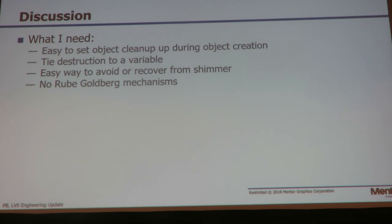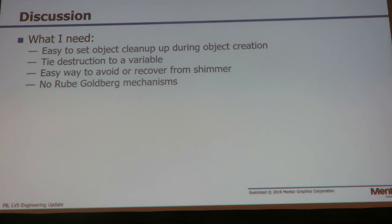It seems like Tcl almost gets there — we've got about three different mechanisms that do almost the right thing, except either not working in the global scope, being a bit of a Rube Goldberg thing where you're relying on one variable to tell you when another variable has gone away, or having issues with shimmer on the Tcl object. It'd be nice to get something that would overcome those mechanisms.